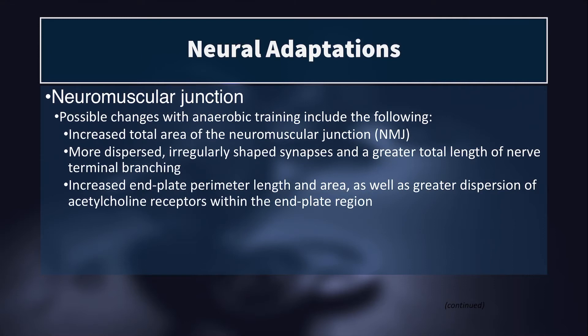At the neuromuscular junction, there are many possible adaptations. These include an increase in the total area of the neuromuscular junction so more acetylcholine can pass between the alpha motor neuron and the muscle cell, more dispersed and irregularly shaped synapses, a greater total length of nerve terminal branching, increased end plate perimeter length and area, and greater dispersion of acetylcholine receptors within the end plate region. These adaptations enhance the coupling between the nerve and muscle cell so acetylcholine can diffuse more quickly and be received more readily.